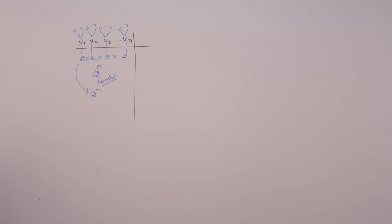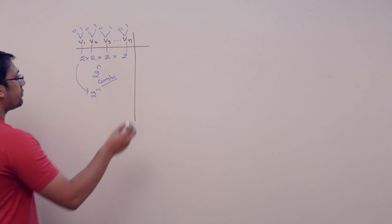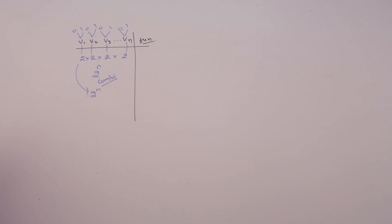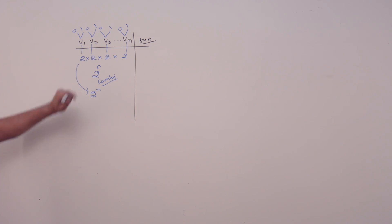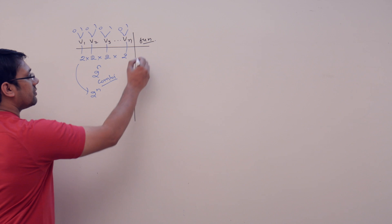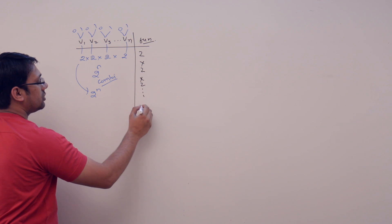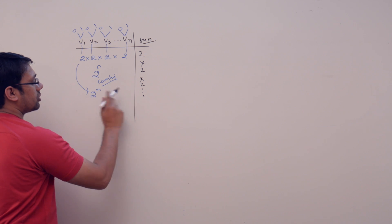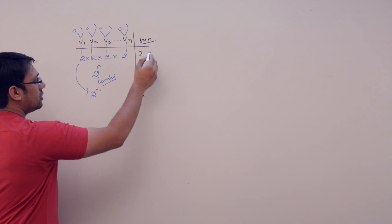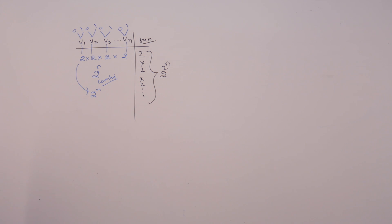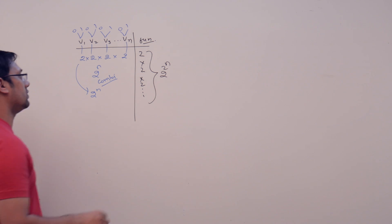In the same way, if we look at how many functions are possible, then for all these different combinations, for every combination the function can assume two values — either 0 or 1. So for 2 raised to power n combinations, we have two values each, meaning 2 raised to power 2 raised to power n switching functions are possible, as we have already discussed in the previous video.